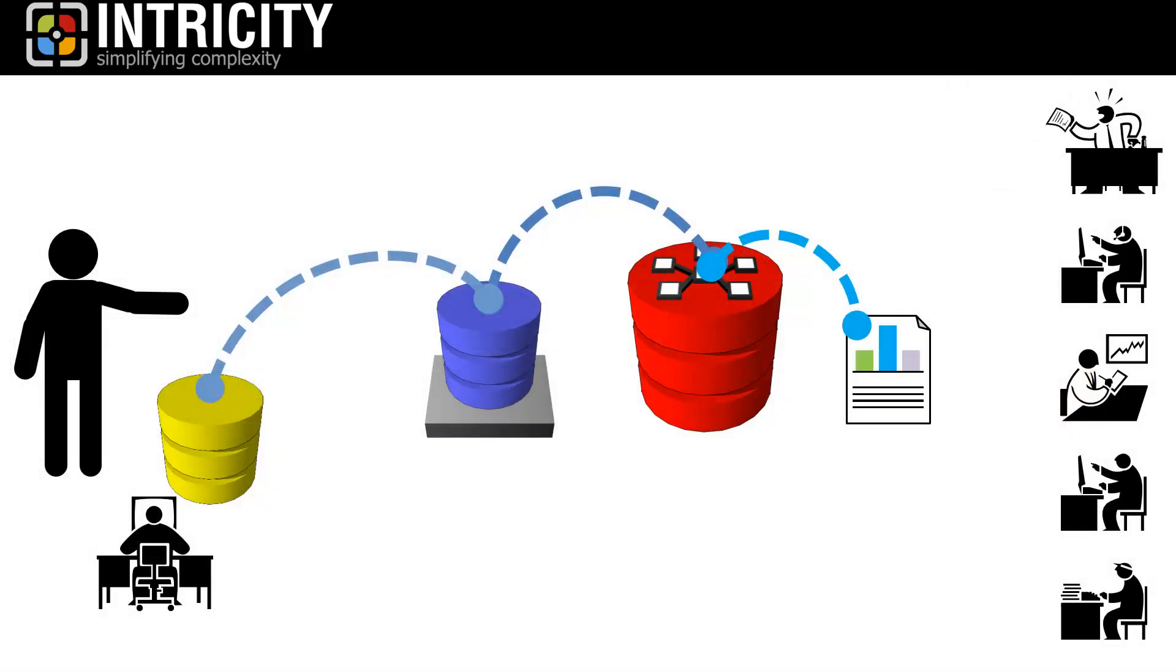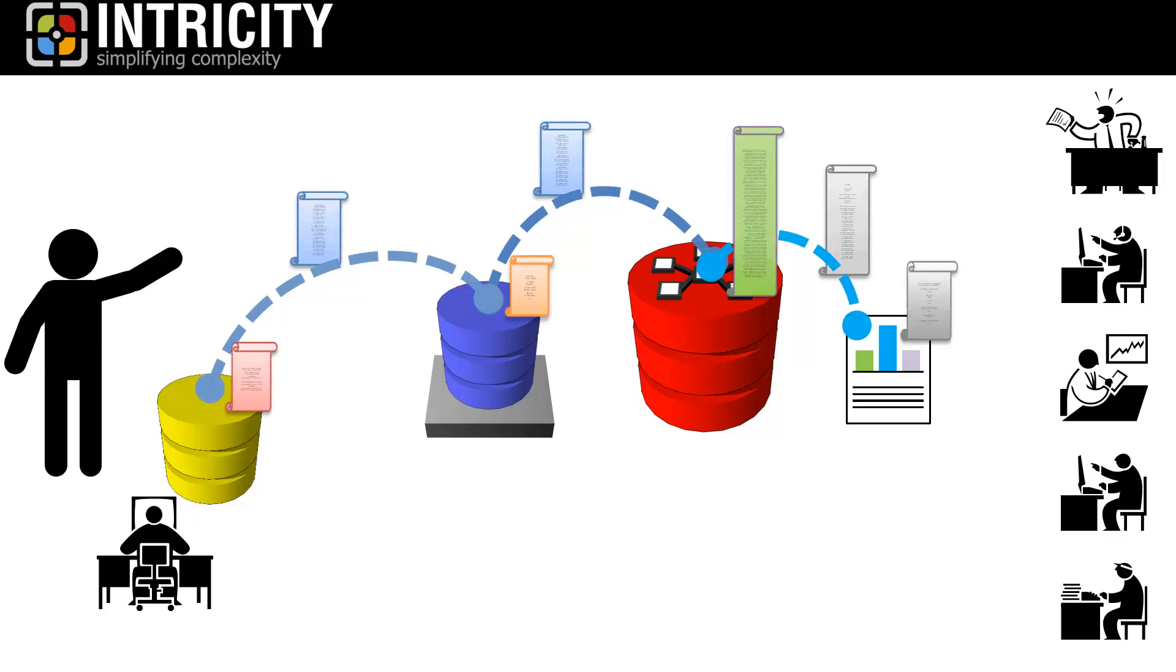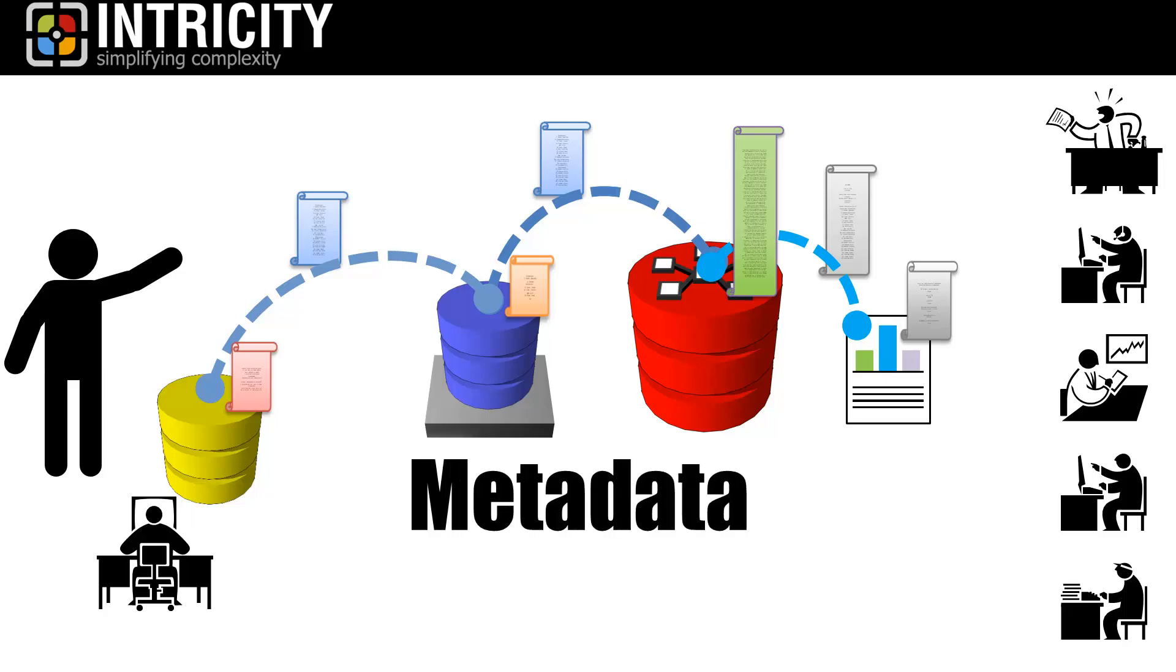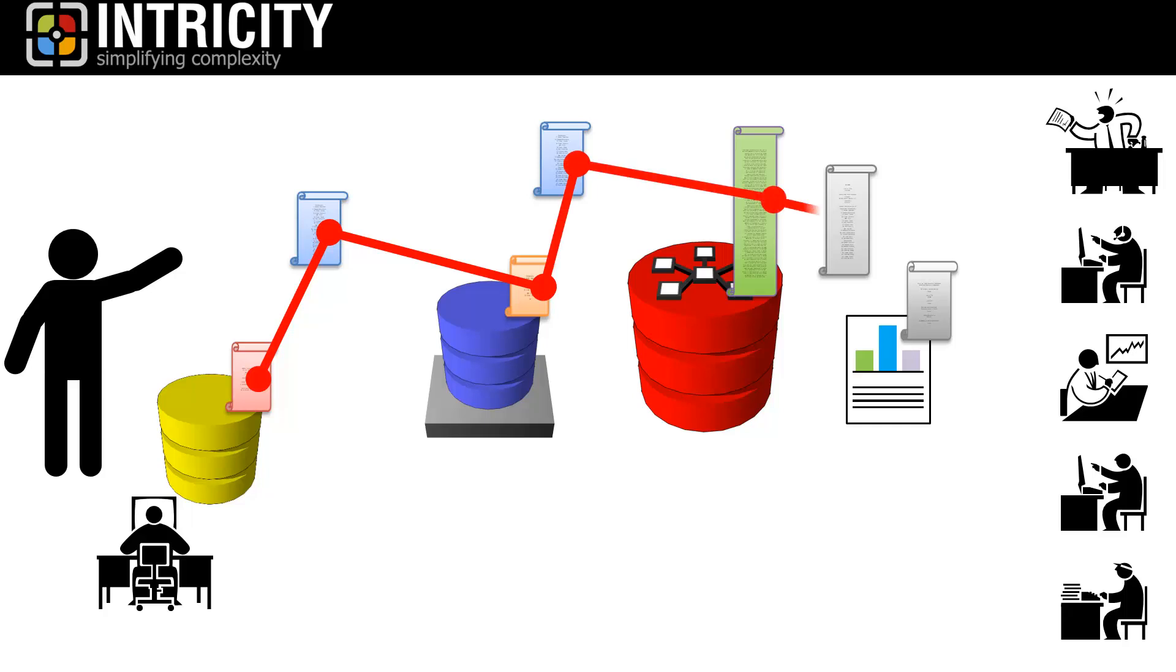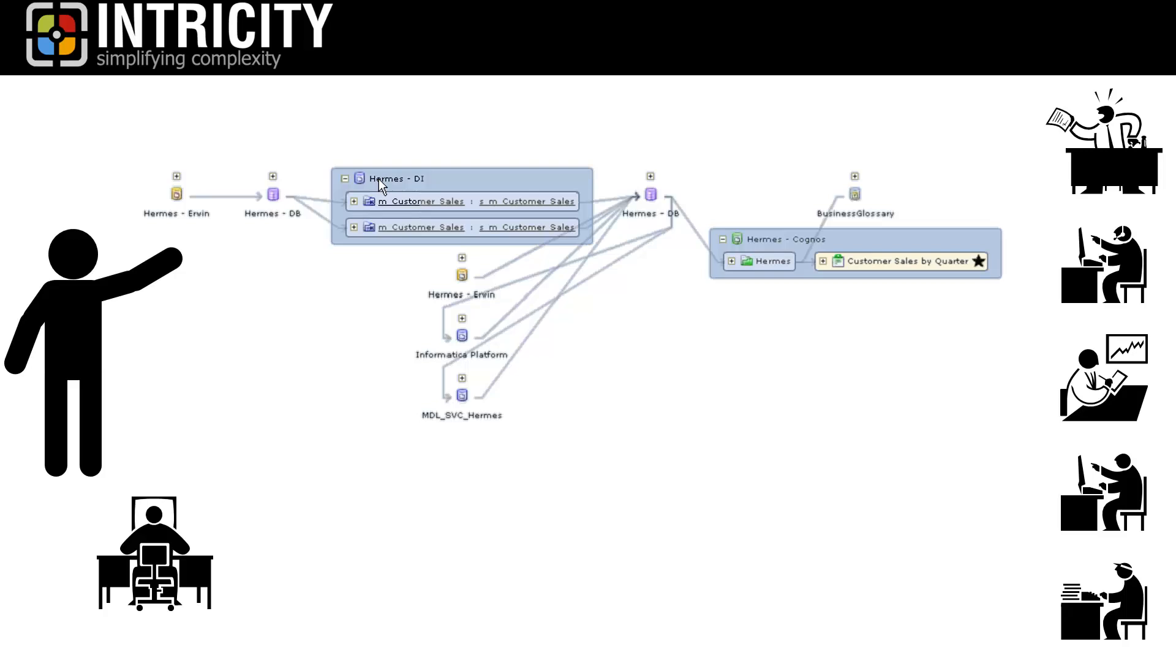It just so turns out that within all these hops, each one of these systems keeps a log of that data that's being handled. And these logs are what we call metadata, or information about the data. By tying together the different metadata sources, you can begin to get a picture of where the data is moving and how it's changing.